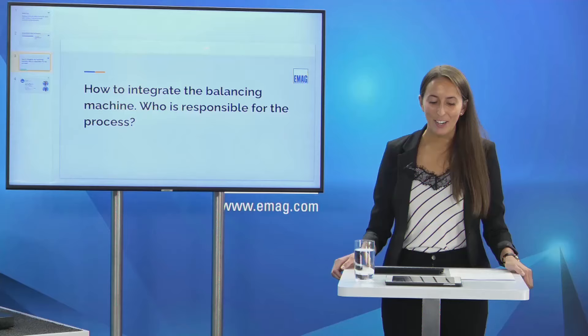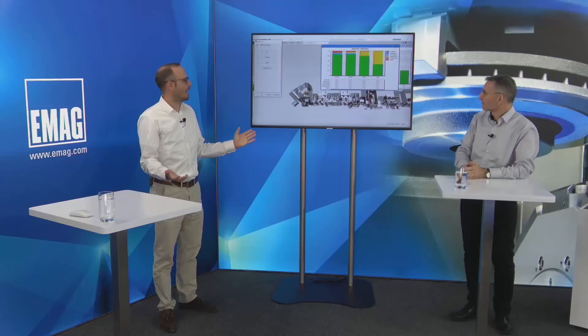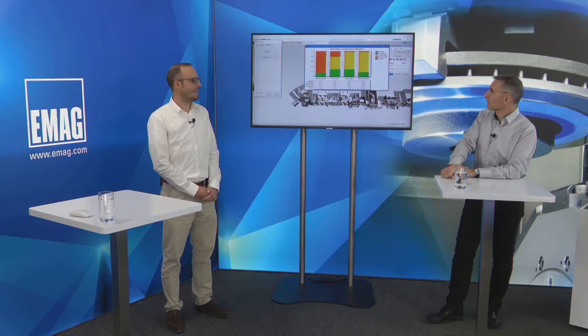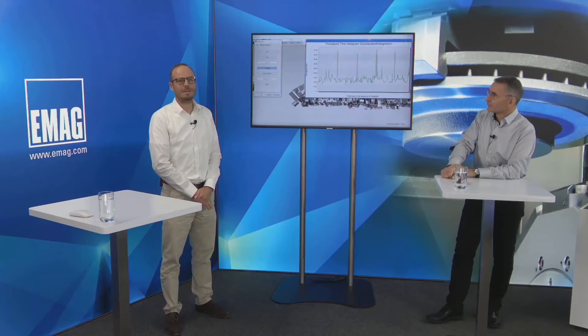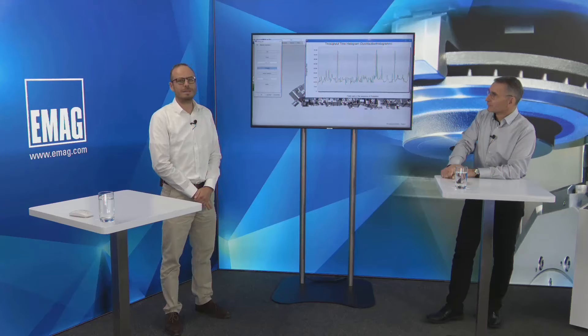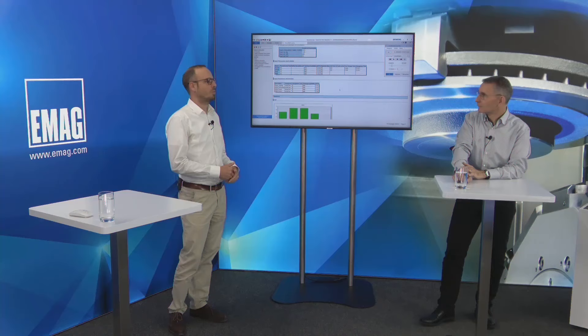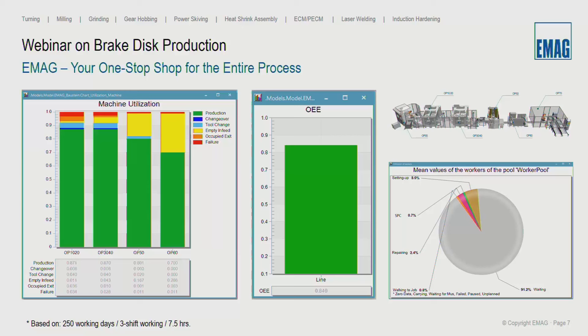Another question: how to integrate the balancing machine — who is responsible for the process? As already said, EMAC is your contact partner. EMAC will take care of the specifications to integrate the balancing machine into the manufacturing system. EMAC is responsible for the complete process, including the balancing machines, measuring machines, and robot cells. We also offer a simulation showing how the workflow runs through the line, with output data including OEE calculations and bottleneck identification.